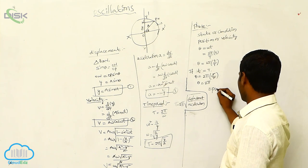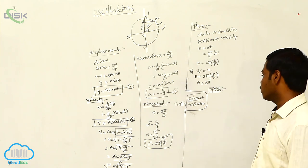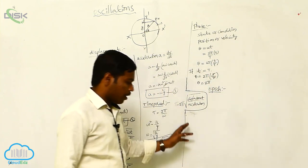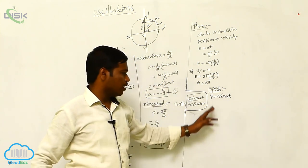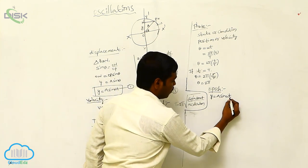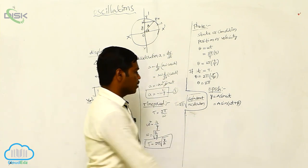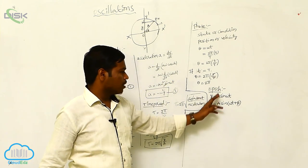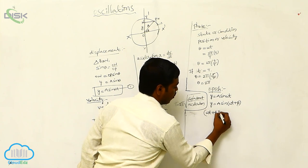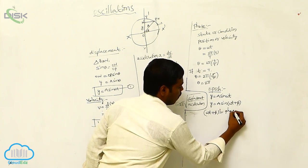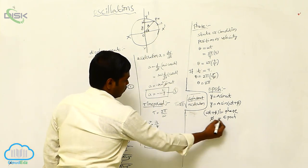Epoch means the starting phase of the particle. In the displacement equation y = A sin(ωt), we can also write y = A sin(ωt + φ). Here, phi (φ) is called the epoch, that is the starting phase of the particle. The total quantity (ωt + φ) is called the phase, and φ alone is called the epoch.